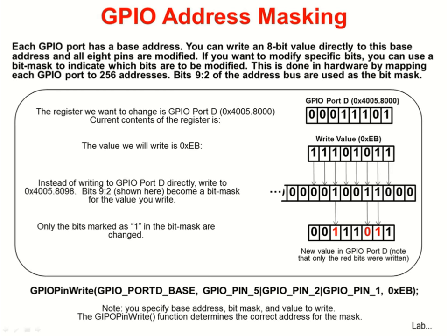GPIO Address Masking is a somewhat unusual technique for programming the GPIO port pins. Each GPIO port has a base address — for example, GPIO port D has a base address of 4005-8000. You can write an 8-bit value to the port directly to that base address and all 8 pins will be modified, just like GPIO ports have worked since the earliest microcontrollers. If you want to modify specific bits, you would normally read the value on the port pins, change the specific bits, and then write the value back — a read-modify-write operation that is fraught with issues. For instance, if an interrupt changed a pin state in the middle of this process, your code would write the wrong value to the pin.